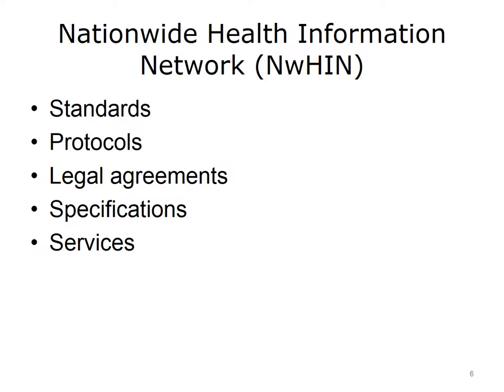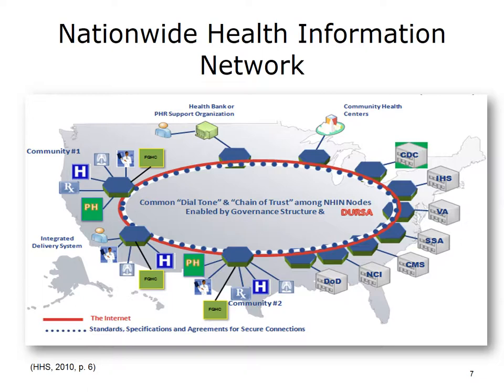Think of the Nationwide Health Information Network as a collection of standards, protocols, legal agreements, specifications, and services overseen by the Office of the National Coordinator for Health Information Technology to support the secure exchange of health information over the Internet. The NWHIN has been referred to as a health Internet, which is intended to involve consumers, providers, government organizations, and others in its fabric. The image entitled Nationwide Health Information Network (NWHIN) consists of a map of the United States with two rings: a red outer ring labeled the Internet, and a blue dotted inner ring labeled Standards, Specifications, and Agreements for Secure Connections.